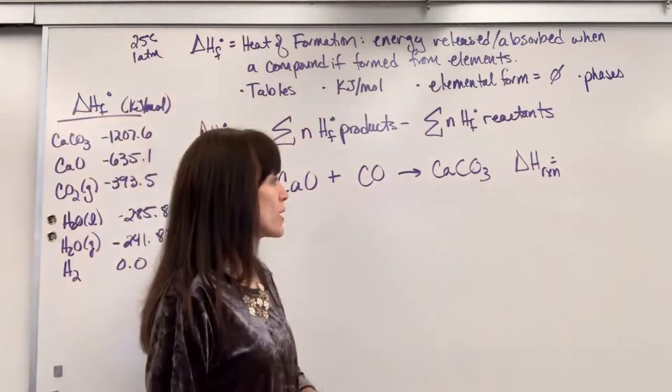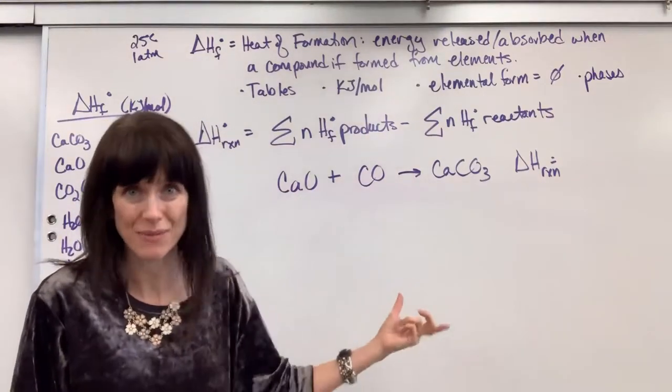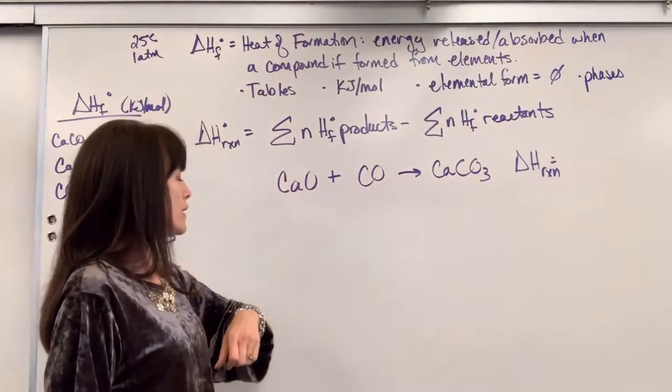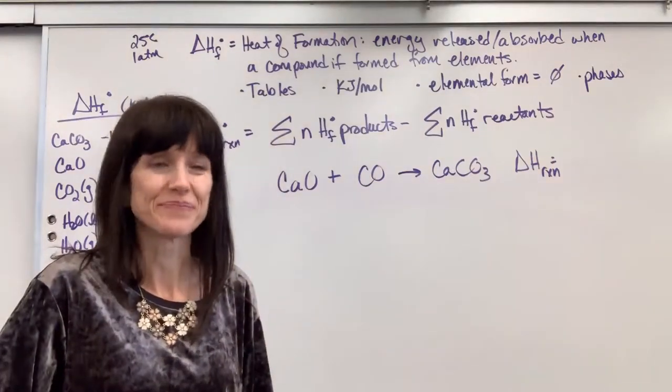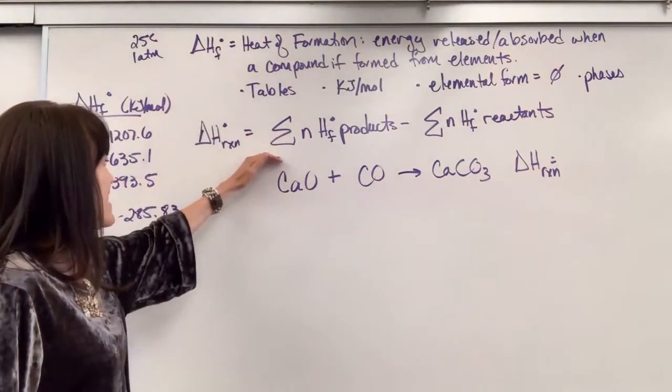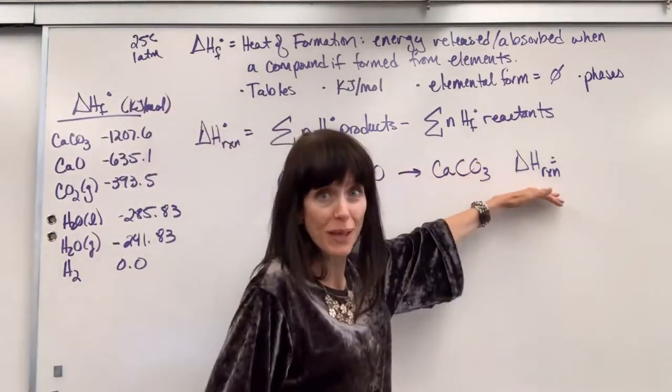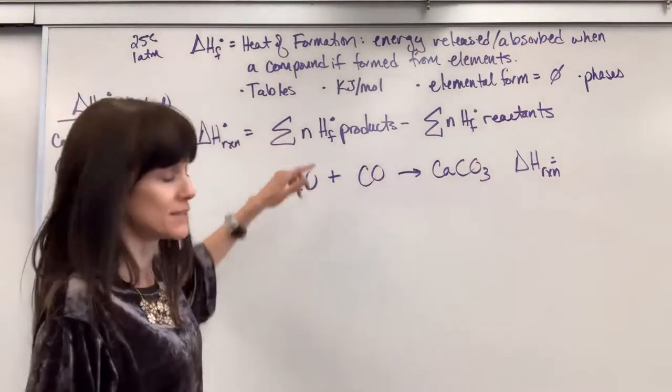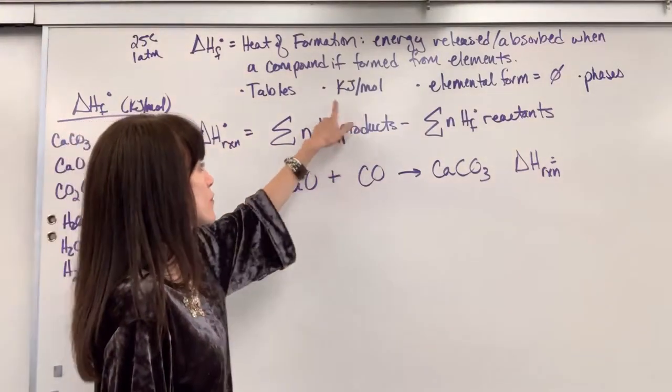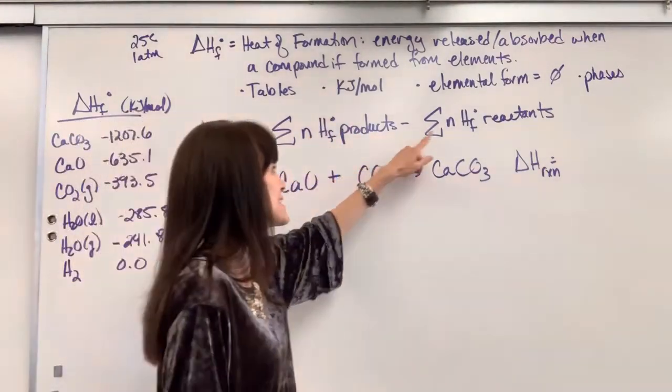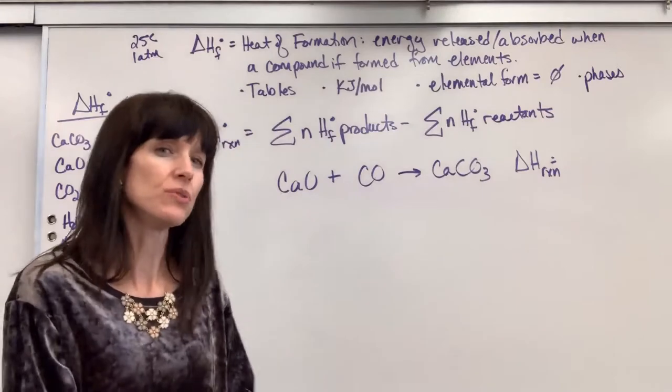When we combine these reactants to form that product, and notice this isn't a heat of formation because I'm combining compounds, not elements. When we combine these reactants to form that product, is it endothermic, exothermic, and what's the value? So we're going to use this formula up here. It tells us that the enthalpy for an entire reaction, this thermochemical equation, is going to be the sum of the moles times the heat of formation of all the products minus the summation of the moles times the heat of formation of reactants.